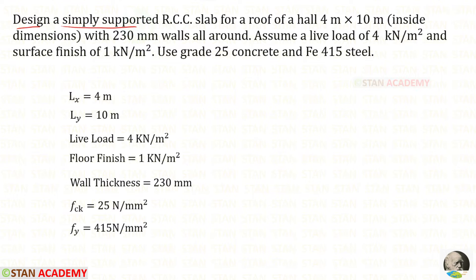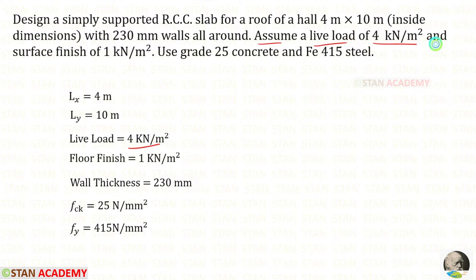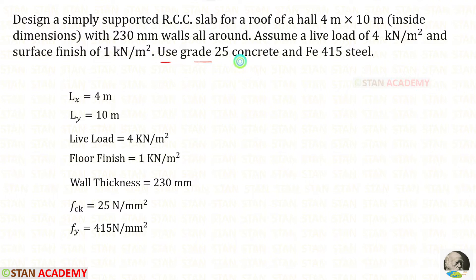Design a simply supported RCC slab for a roof of a hall 4 meter by 10 meter inside dimensions. The short side LX is 4 meter and the long side LY is 10 meter with 230 millimeter walls all around. Assume a live load of 4 kilo Newton per meter square and surface finish of 1 kilo Newton per meter square. Use grade 25 concrete and Fe 415 steel, so FCK is 25.